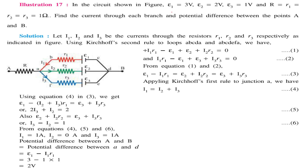In the circuit shown, E1 equals 3V, E2 equals 2V, E3 equals 1V, and resistances R1, R2, R3 are each 1 ohm. Find the current through each branch and the potential difference between points A and B. Assuming current I flows from A to B, it splits into I1, I2, and I3. Applying Kirchhoff's junction rule at point A — one current I1 comes in and two currents I2 and I3 leave — gives I1 equals I2 plus I3 as the first equation.